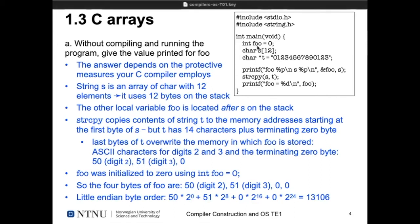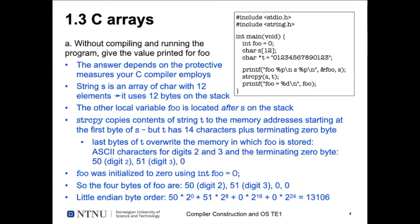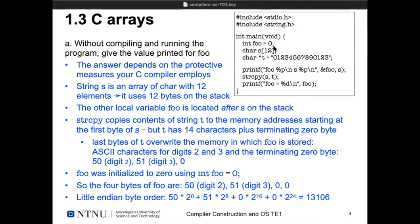`s` is an area of 12 characters — 12 bytes — on the stack because the variables are local. Variable `foo` takes 4 bytes and is located after `s` on the stack, at higher addresses since the stack grows downwards. When we execute `strcpy`, it doesn't know that `s` has only 12 storage spaces. The string is 14 characters plus a terminating zero. `strcpy` copies all 15 bytes starting at `s[0]`, writing the 12 bytes of `s` and then continuing to overwrite the contents of `foo`. This is a classic buffer overflow — a typical C security problem responsible for almost half of security vulnerabilities today.